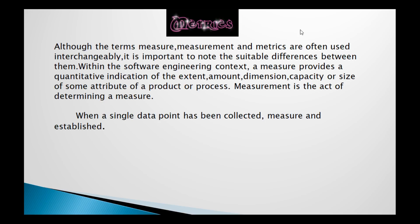So with that analogy, the concept of metrics will make sense to you. Next, the term indicator — collection of several metrics is called an indicator. Collection of measures is called a measurement, and collection of metrics is called an indicator.